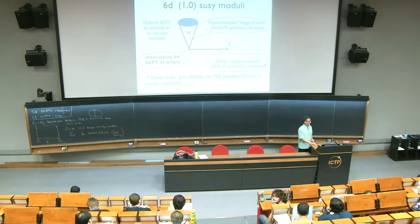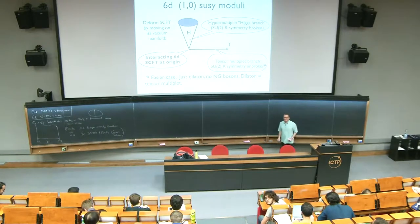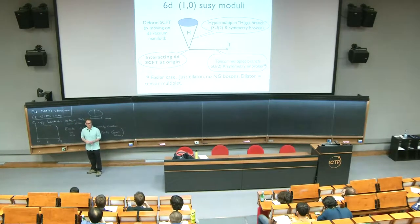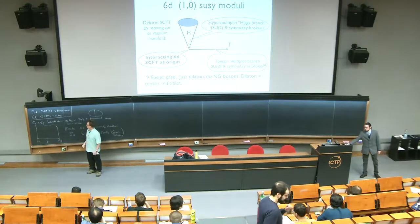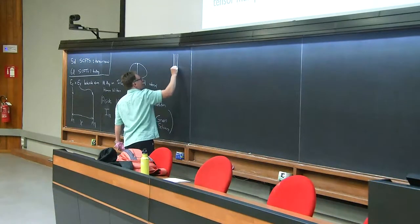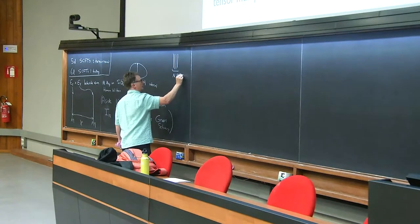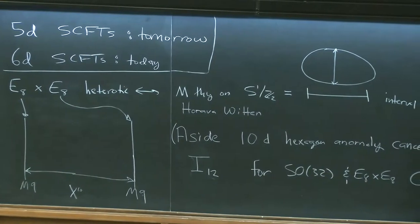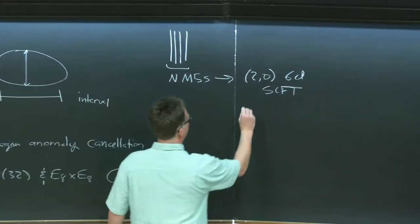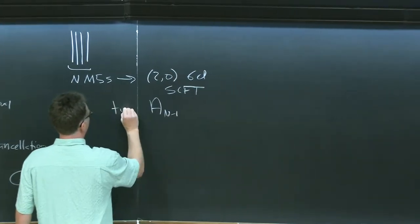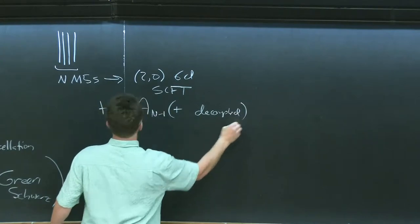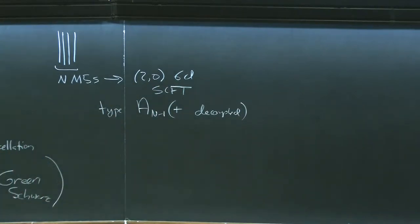So my plan for the remaining two lectures is today I'll discuss six-dimensional superconformal field theories and tomorrow I'll discuss five-dimensional theories. Yesterday I was discussing (2,0) theories — just as a reminder, if we have n M5 branes we get a (2,0) six-dimensional superconformal field theory, which is A_{n-1}, plus a decoupled tensor multiplet which is the overall translational mode.